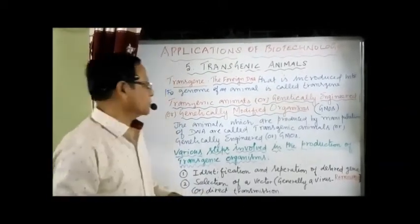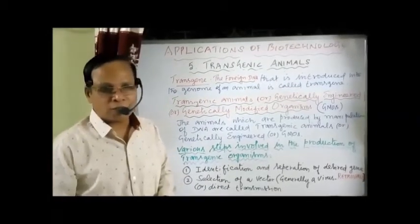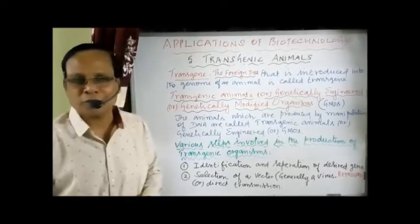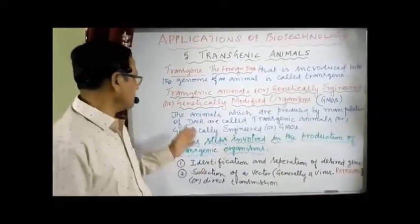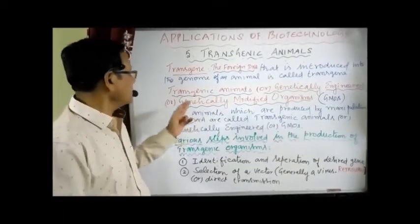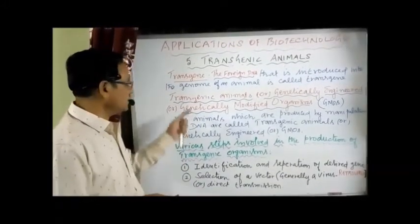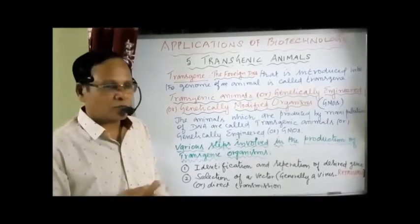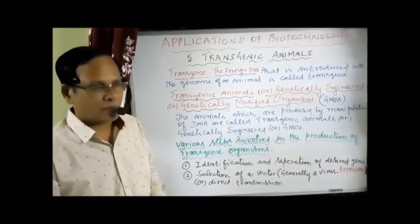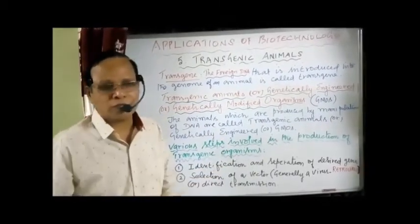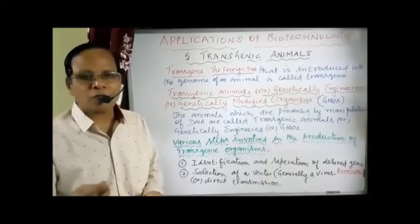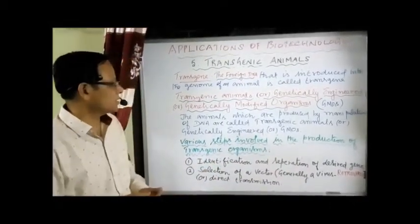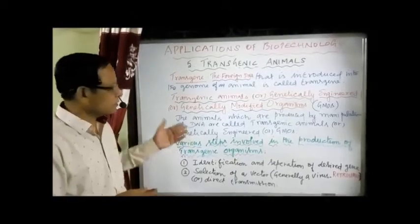The animals which are produced by manipulation of DNA are called transgenic animals, or genetically engineered organisms, or genetically modified organisms — GMOs. For example, golden rice is an example, or the rosy cow, which produces human alpha-lactalbumin because it contains a transgene. Also, we can produce transgenic goat to get human alpha-lactalbumin. The desired gene is introduced to get an organism called a transgenic organism, or genetically modified organism, or genetically engineered organism.